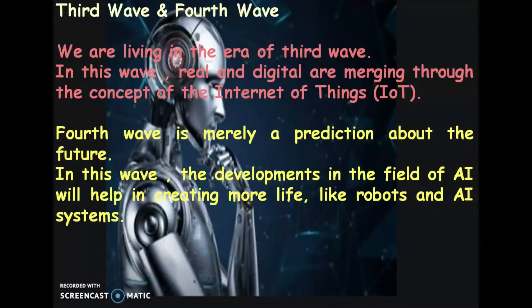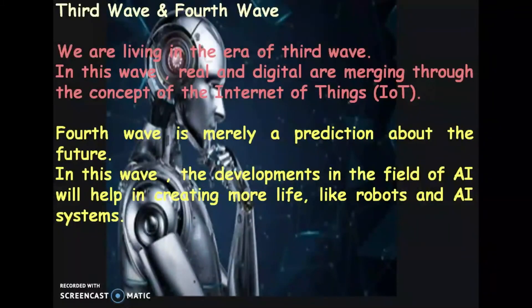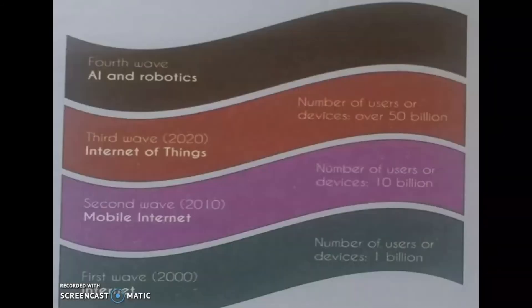The fourth wave is merely a prediction about the future. In this wave, developments in the field of AI will help in creating more lifelike robots and AI systems, meaning that AI systems and robots will be able to do what human beings are doing today. These are the four different waves of technological advancements.